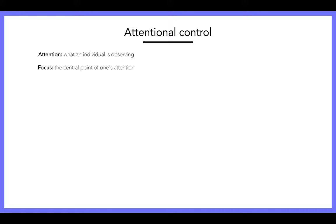We then have focus — this is the central point of our attention. So we might have our attention on multiple things, but if we're focused, we have a central point to our attention. And then we have concentration: the ability to perform with a clear and present focus. Attentional control is more effective if the performer concentrates on cues that are relevant at the particular time.